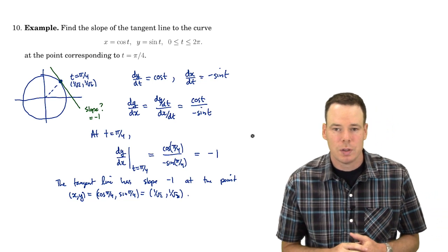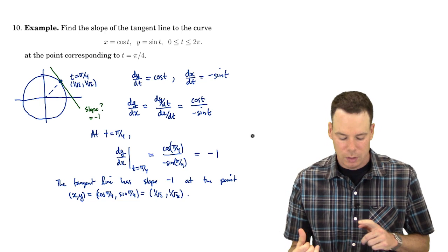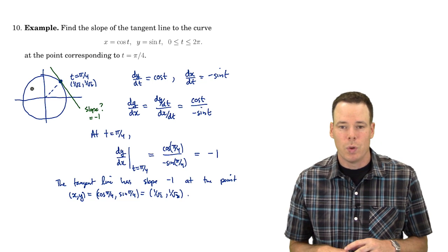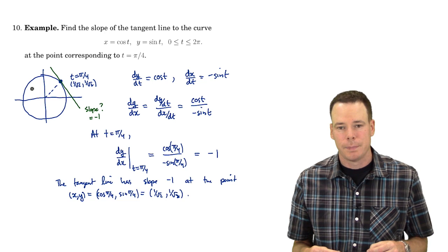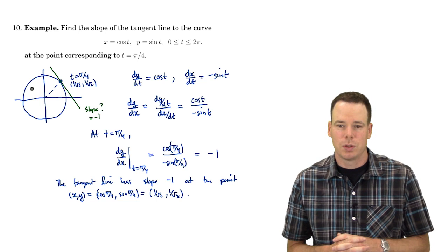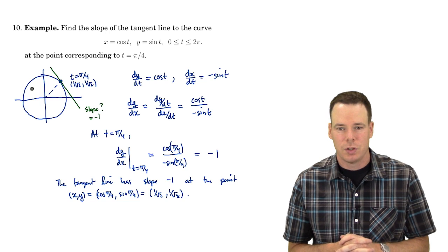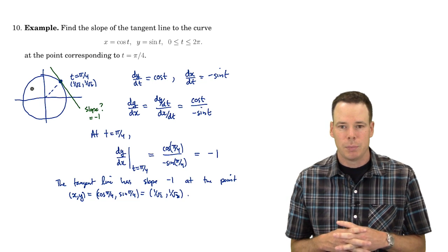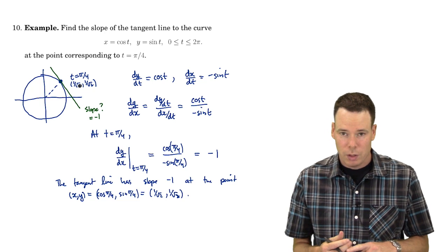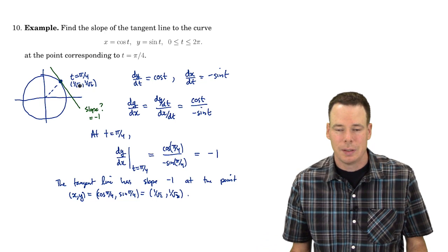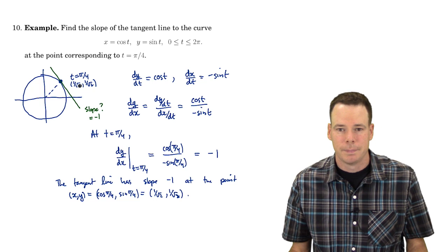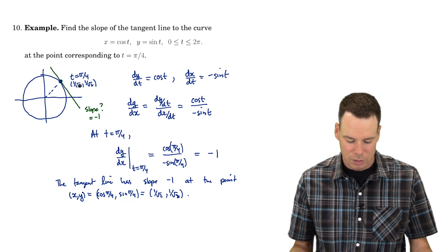Notice we've got three ways to compute the slope of the tangent line at this point. We could look at it as the upper semicircle with equation y equals the square root of 1 minus x squared and apply differentiation rules with the chain rule, then plug in x equals 1/√2. We could look at it as an implicitly defined curve x squared plus y squared equals 1 and use implicit differentiation. Or we can look at it as a parametrized curve and get the derivative in this way. So we've got three different ways now to compute the slope of the tangent line.